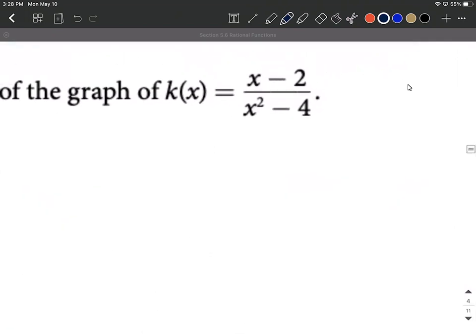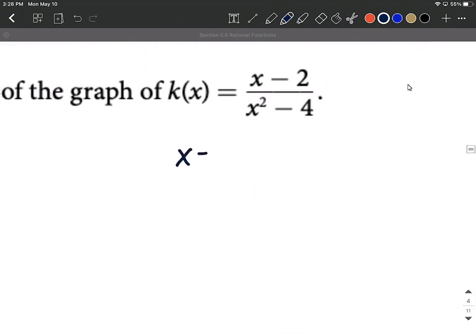So we're going to start out with x minus 2 over x squared minus 4. I believe we can factor that denominator. So x minus 2 over difference of squares here. This is going to be x minus 2 times x plus 2.